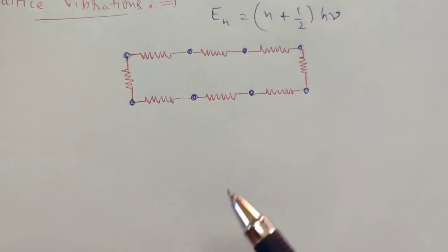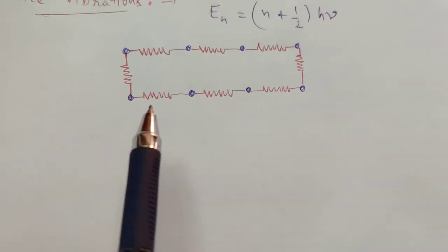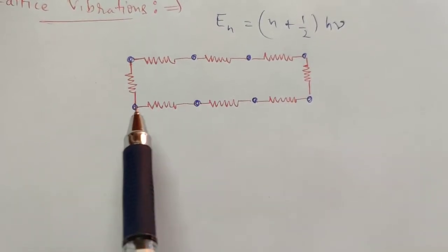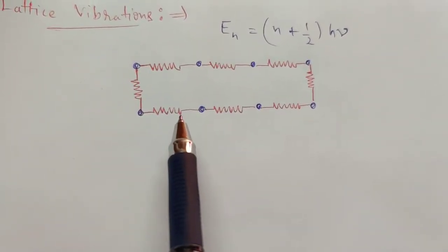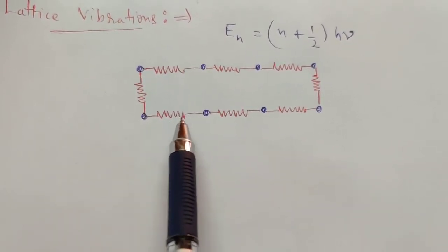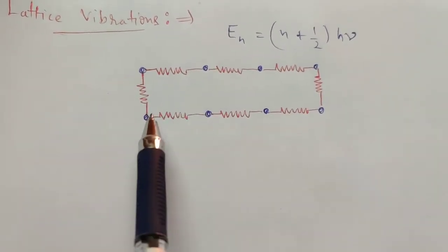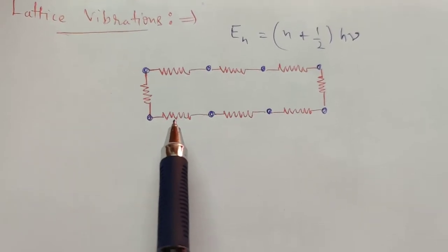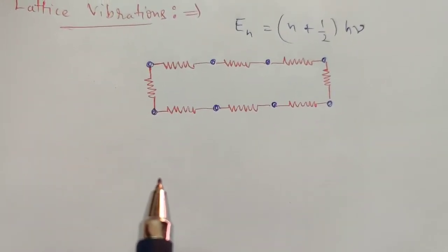Each atom is considered as a sphere, and interaction between atoms extends only to nearest neighbors. Each atom is connected to its nearest neighbor by an elastic spring having spring constant beta. Since the springs are elastic, Hook's law is followed — the interaction obeys Hooke's law.